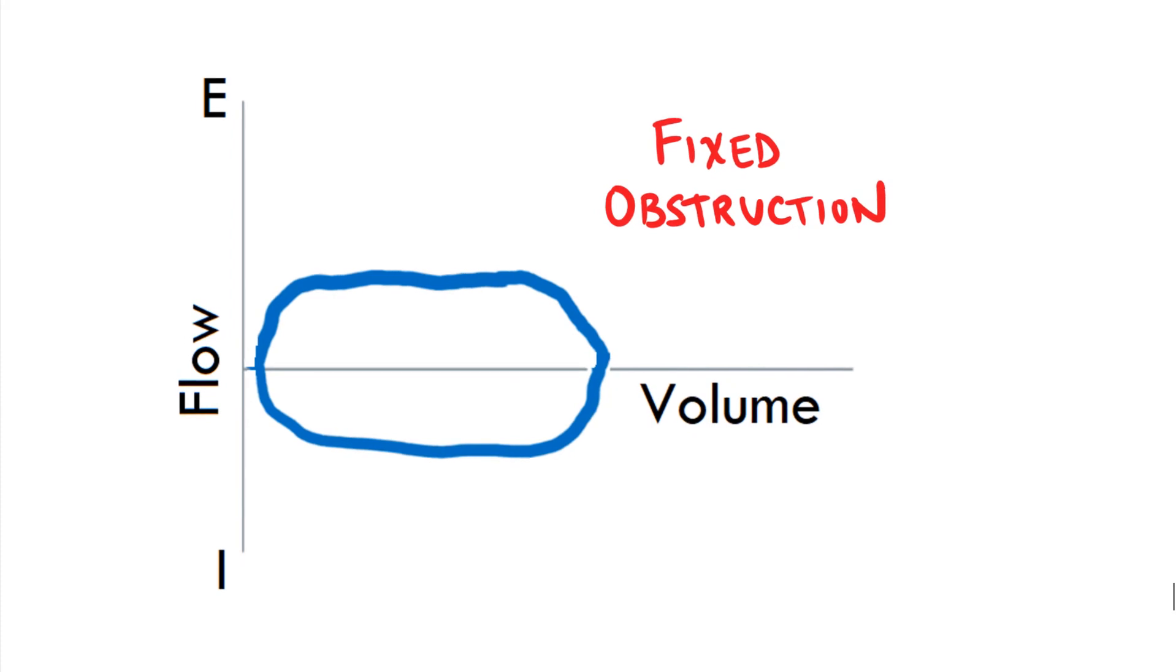And this is a fixed obstruction where you can see the inspiratory and expiratory limbs affected.